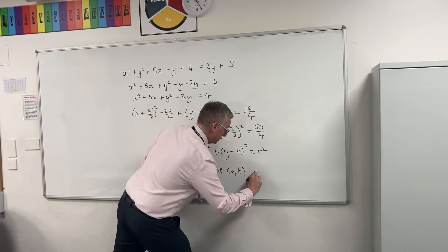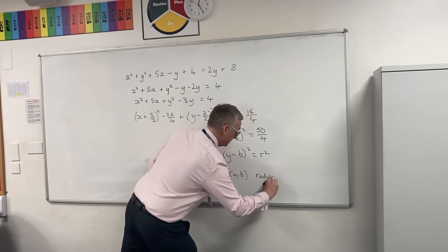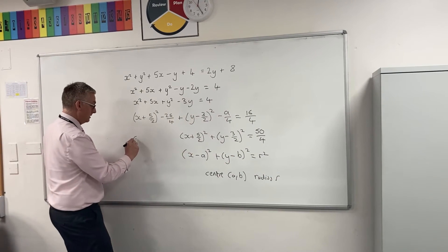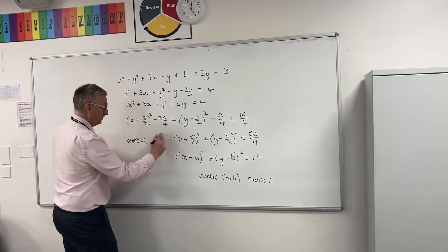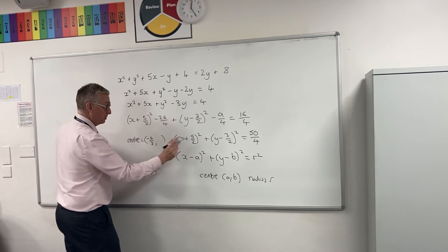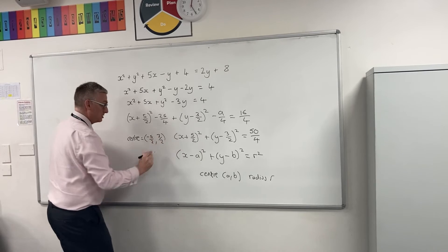So my centre is AB, and the radius is r. So for this one, the centre is, be careful here, negative 5 over 2, 3 over 2, those are the coordinates.